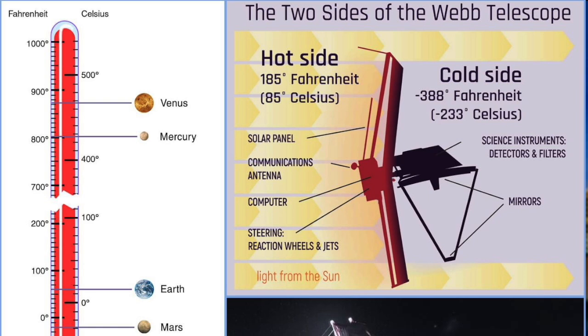To put in perspective, the sun-facing side of the shield, the temperature is going to get up to 185 degrees Fahrenheit, while the cold side of it, the side where all the sensors are, will be around minus 388 degrees.